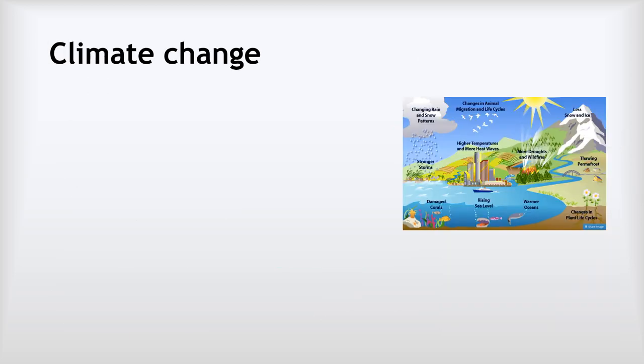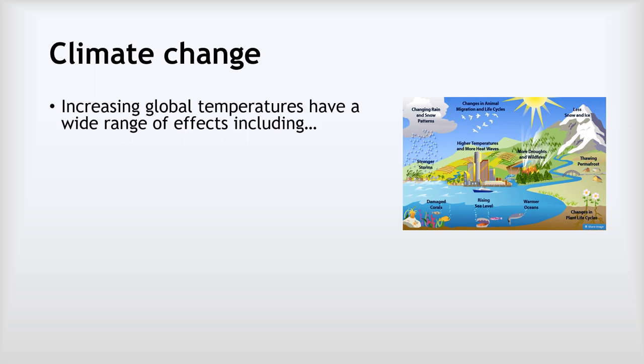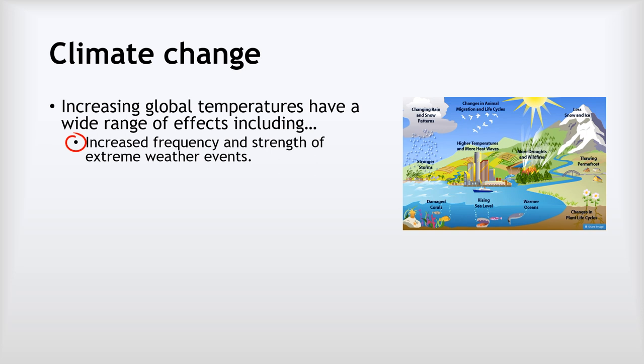The temperature has already risen by about one degree celsius and will rise by a further one to three degrees celsius by the end of the century. This is quite a big deal — changes are already happening and will get worse. We're seeing increased frequency and strength of extreme weather events: more and stronger hurricanes, heat waves, droughts. We're also seeing changes to rainfall and weather patterns — some places find their rainy season starting later and shorter, while others find it longer and dropping more rain, affecting farmers and wildlife.